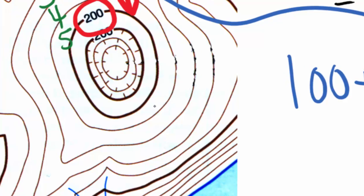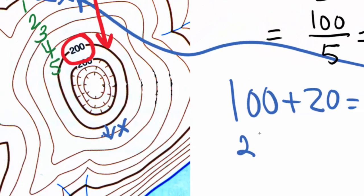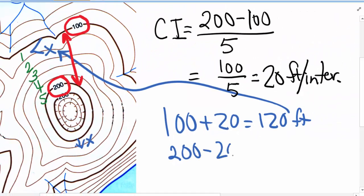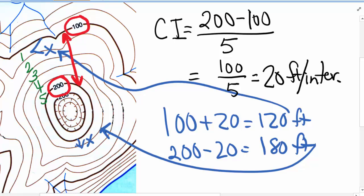Any other line on the map can be determined in a similar way. Let's take this line. You can see that it's one line down from the 200 foot interval. So, 200 minus 20 is equal to 180 feet. And again, that's the elevation of this particular line.